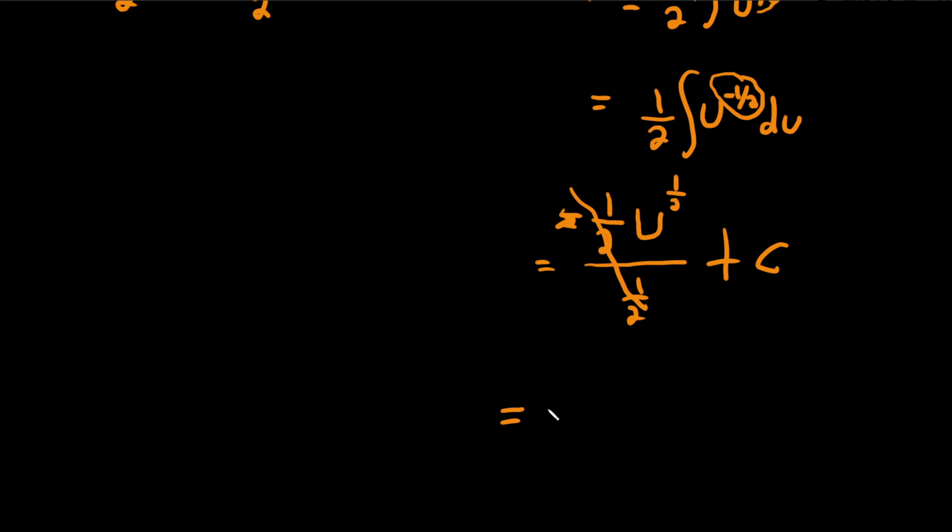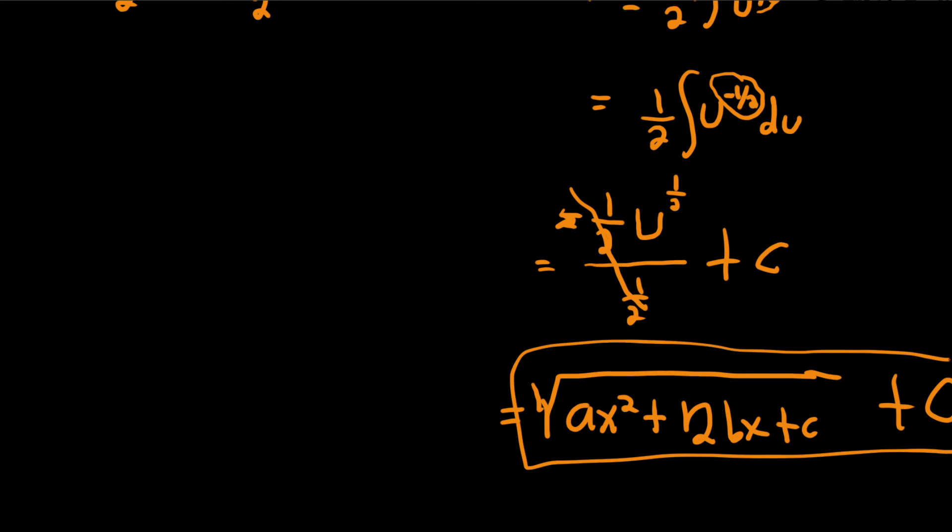So we can write the 1 half as the square root again to make things look prettier. The final answer is square root of ax squared plus 2bx plus c. And then we have our giant capital C, which is our constant of integration. So not too bad. Just a lot of variables. I hope this video has been helpful.